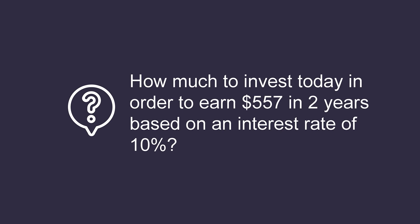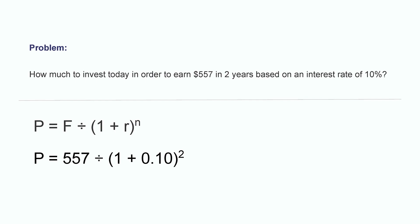Say for example an investor wanted to know how much to invest today in order to earn $557 in two years from now based on an interest rate of 10%. This rate is also called the discount rate since it's being used to discount the future cash flows to today's dollars. In this case, we would take the $557 future value and divide it by 1 plus the 10% interest rate to the power of two years. The present value equals $460. This means in order to earn $557 over the next two years based on these conditions, the investor would need to invest $460 today.